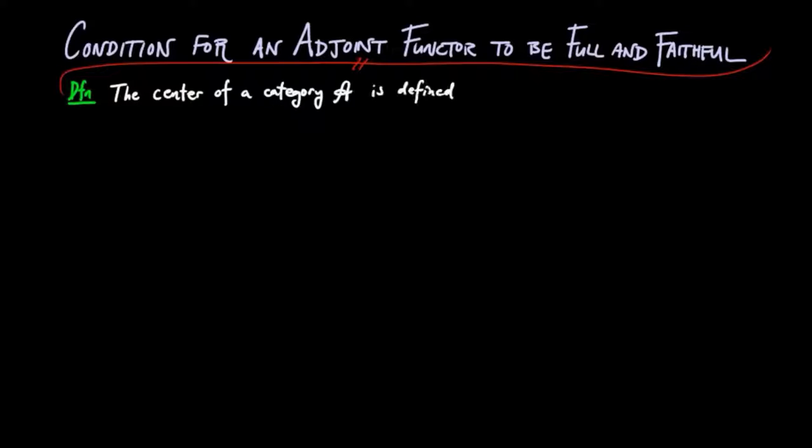The center of the category A is defined to be the monoid of endonatural transformations of the identity. It turns out that the center of a category is always a commutative monoid.